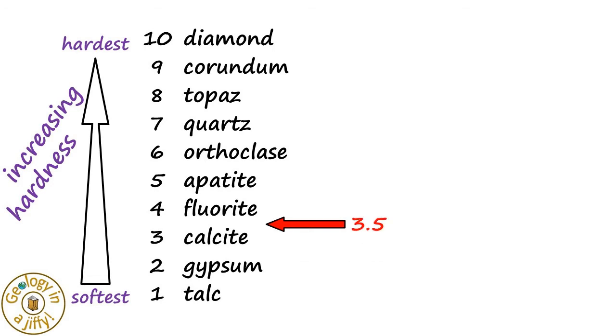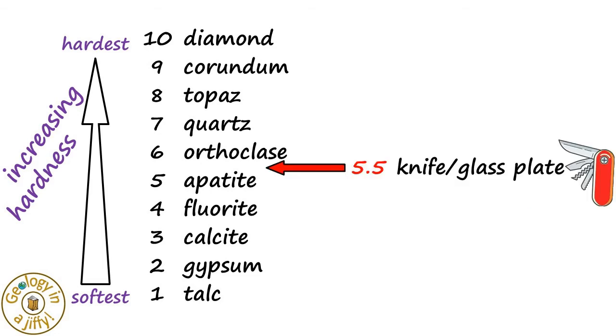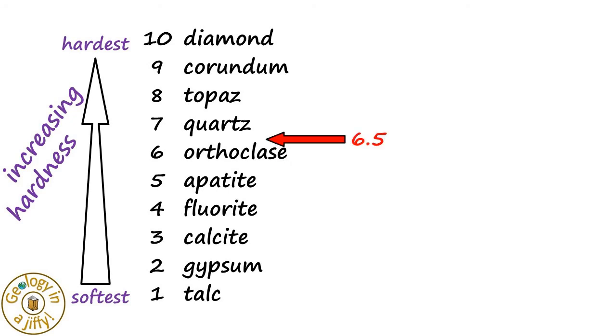A mineral of hardness above 3.5 can scratch a copper coin. A mineral of hardness more than 5.5 can scratch a knife or glass plate. A mineral of hardness greater than 6.5 can scratch a steel nail. And any mineral below 8.5 can be scratched by a drill bit.